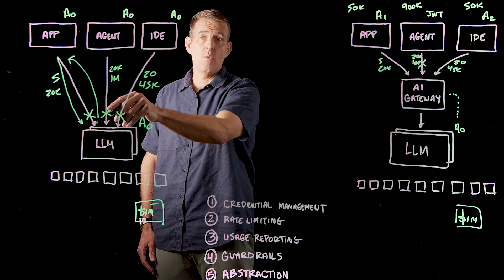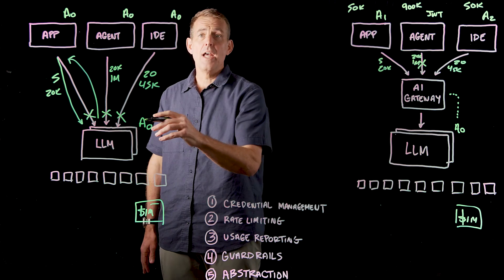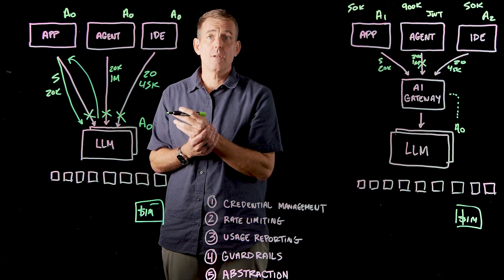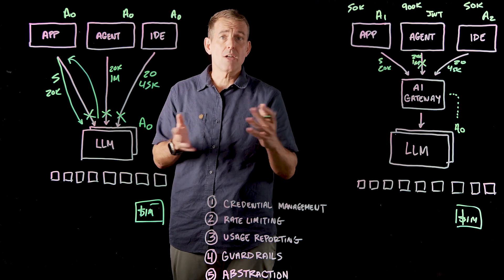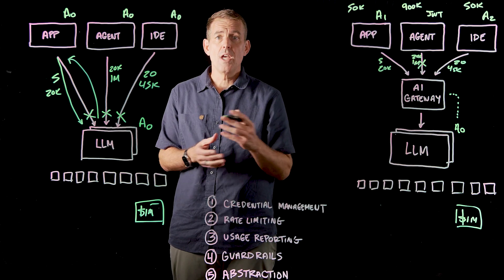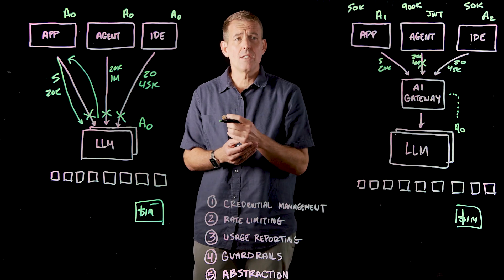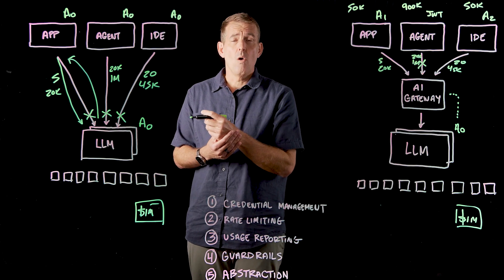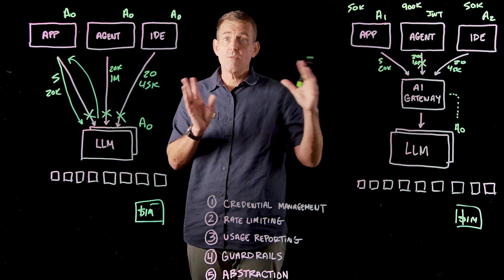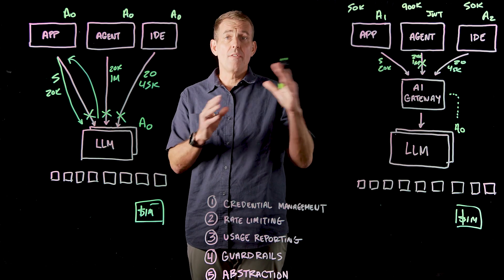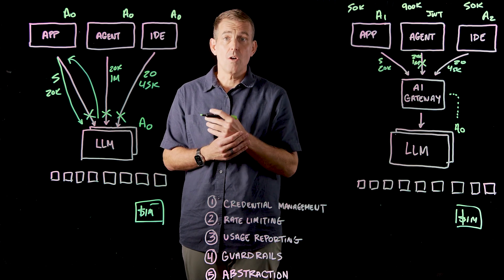You might not want that data even escaping your network. There could be very specific requirements where it's not just obvious patterns like credit card numbers and social security numbers — you may have unique PII constraints for your customer base, or intellectual property you don't want to escape your network. You don't want developers accidentally putting in key bits of code or other IP materials that get sent to an LLM provider. You need to be able to instrument advanced guardrails for these scenarios.